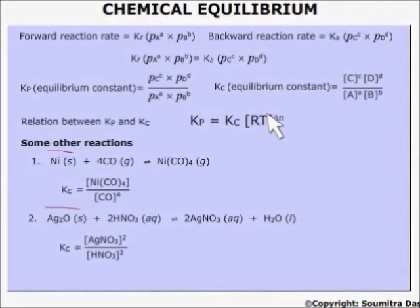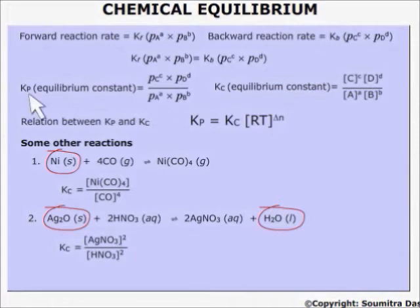Remember that pure solids and liquids are not taken in the equation. This is the equilibrium constant when we take the activities as the partial pressures. When the concentrations are taken, the equilibrium constant is Kc. Note that concentration is written within square brackets only. Moreover, you can get a relation between Kp and Kc from your textbook. I am not going into the derivation part of this relation.